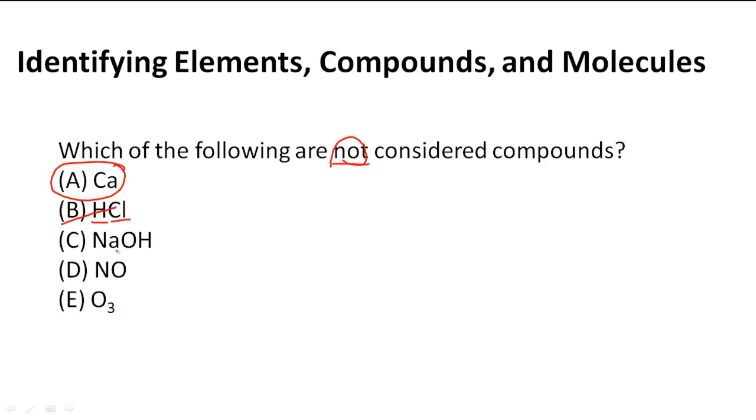NaOH is actually three elements together chemically combined. That's why we write it this way, and so that must mean that it's a compound, which means it's not one of our answers. So I'm going to cross that out.